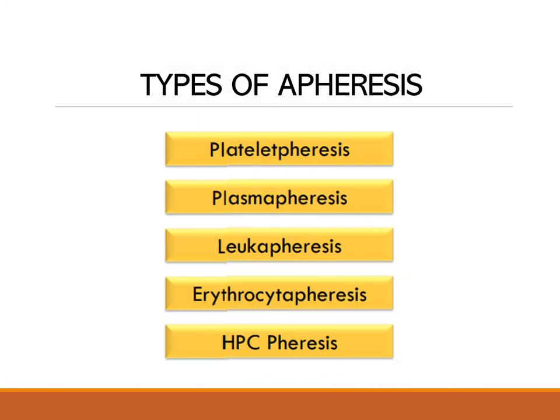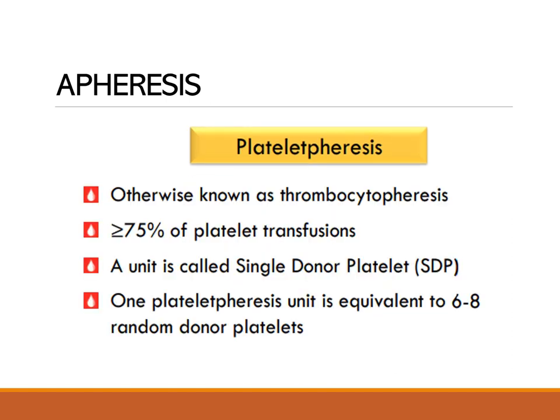There are five types of apheresis: platelet pheresis, plasma pheresis, leukapheresis, erythrocytopheresis, and HPC pheresis. The first type, platelet pheresis (also called thrombocytopheresis), is the most commonly requested because platelets are the most frequently needed blood component. More than 75% of platelet transfusions are made possible through platelet pheresis. A unit is called single donor platelet (SDP), and one platelet pheresis unit is equivalent to six to eight random donor platelets (RDP).